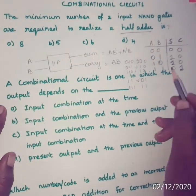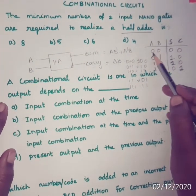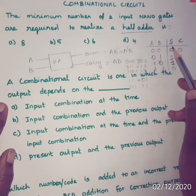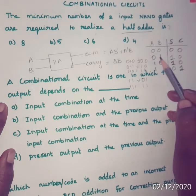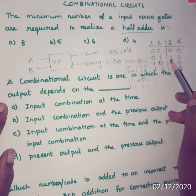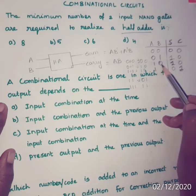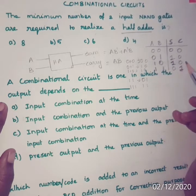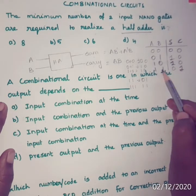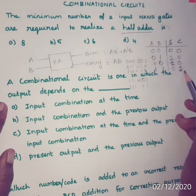Using these addition rules: A=0, B=0 gives sum 0 carry 0. A=0, B=1 gives sum 1 carry 0. A=1, B=0 gives sum 1 carry 0. A=1, B=1 gives sum 0 carry 1.